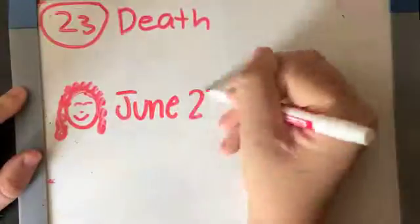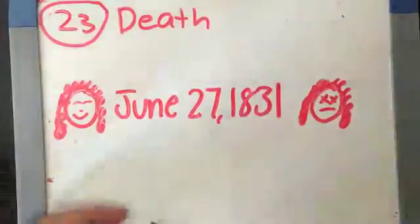Sophie Germain passed away on the 27th of June in 1831.